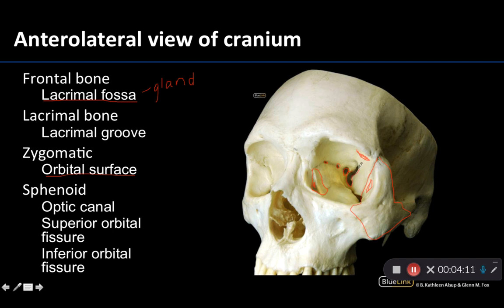Right next to the optic canal, and more irregularly shaped, is the superior orbital fissure. The superior orbital fissure is extremely important in the orbital region because this is how the nerves innervating the extraocular eye muscles enter — oculomotor or cranial nerve 3, trochlear cranial nerve 4, and abducens cranial nerve 6. Additionally, the first division of the trigeminal nerve, the ophthalmic division, moves through this region, as do the ophthalmic veins.